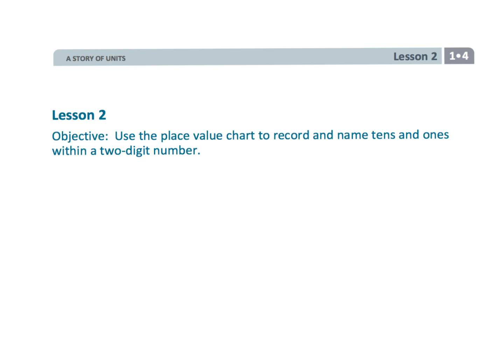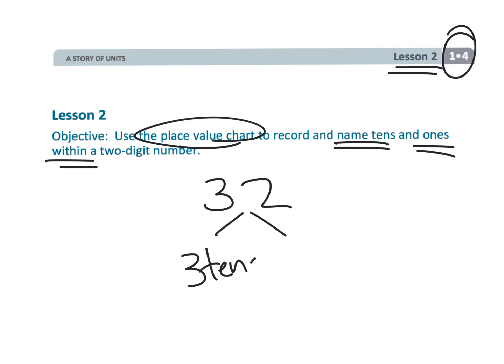That wraps up first grade module 4 lesson 2, using the place value chart to understand two-digit numbers, and that a two-digit number is really the sum, a decomposition of, in this case, three tens and two ones.